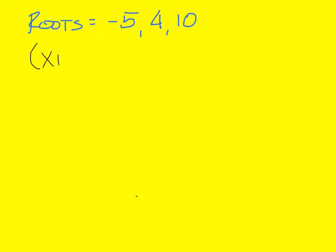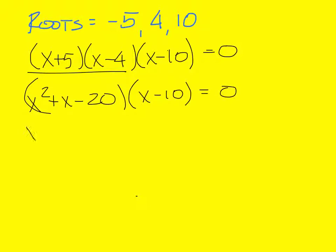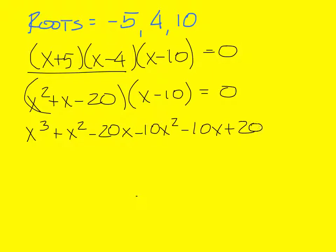You should have x plus 5, x minus 4, x minus 10. When you multiply the first two, it's x squared plus x minus 20. And then multiply that by x minus 10 to come up with x to the 3rd plus x squared minus 20x, and then negative 10x squared minus 10x plus 200. When you simplify, you should have x to the 3rd minus 9x squared minus 30x plus 200.